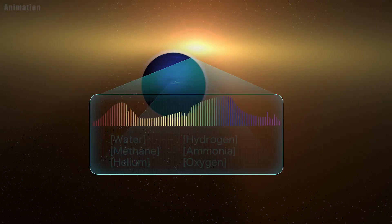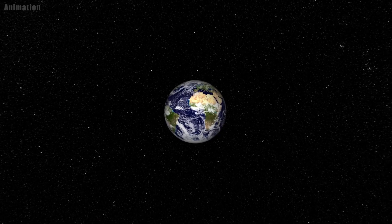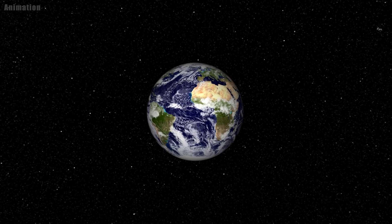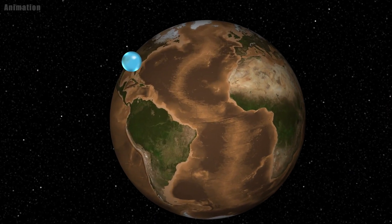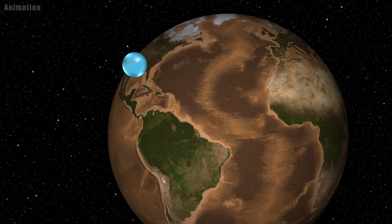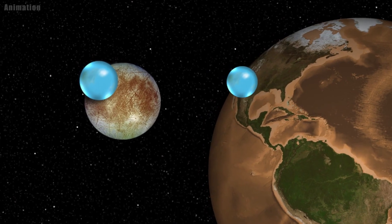Astronomers didn't directly detect water on the Kepler-138 planets. Instead, they compared the planet's sizes and masses to models that concluded up to half of their volume should be made of materials lighter than rock, but heavier than hydrogen or helium. The most common of these materials is water.